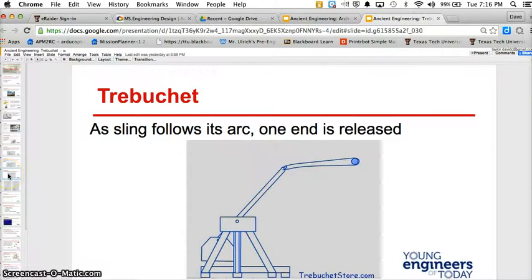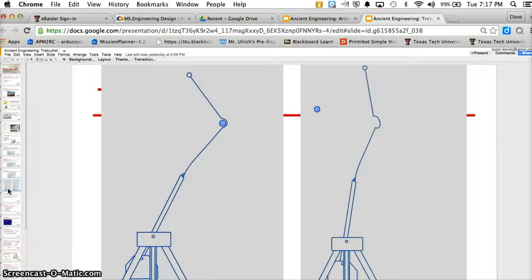Furthermore, as the sling follows its arc, one end is released. As you can see, this pin where one is permanently attached and the other end of the sling is not attached permanently, which allows for a second fulcrum point we'll talk about further on.